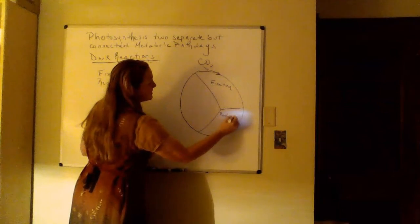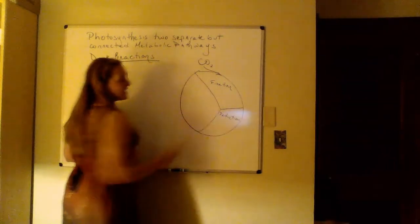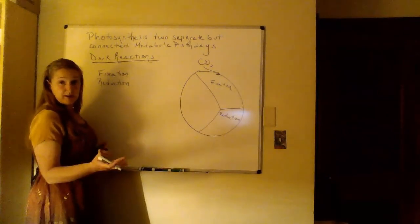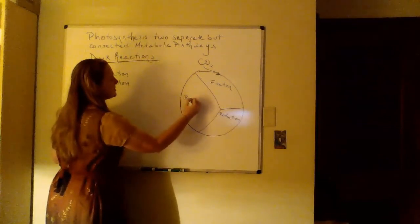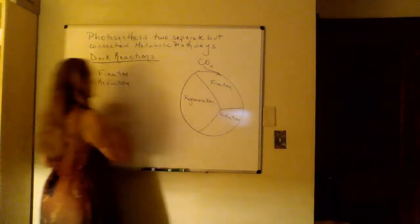Where rubisco grabs a hold of carbon dioxide, we have reduction. And this is where rubisco is going to use the ATP and NADPH energy from the light reactions. And then our third step is regeneration, where we're remaking that rubisco protein.